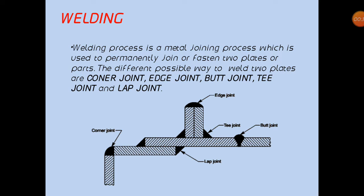We can see some different types of joint which are used to join two parts. The corner joint is where two parts are joined at the corners, and we use it when assembly is at some angle. Then there is edge joint. Then T-joint, which is used when two parts have to be joined at 90 degrees or some angle.